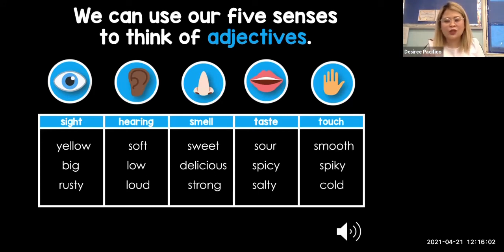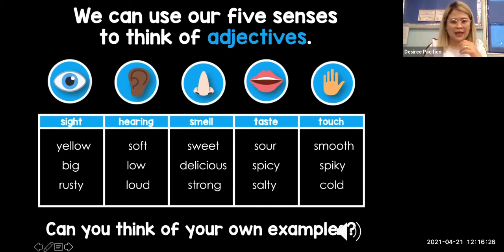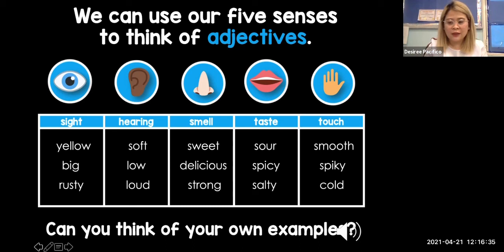For taste it can be sour, spicy, or salty. And for the sense of touch: smooth, spiky, and cold. Take a screenshot of this and I want you to give at least two adjectives for each sense — two for sense of sight, two for sense of hearing, two for sense of smell, another two for taste, and another two for sense of touch.